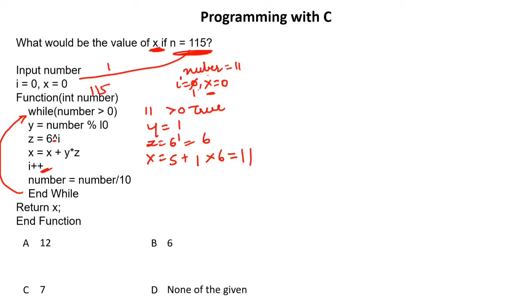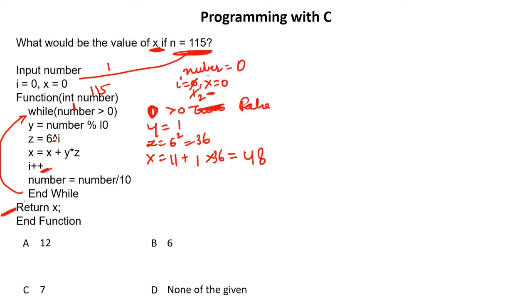Number becomes 11 / 10 = 1. Is 1 greater than 0? Yes. y = 1 modulo 10 = 1. z = 6 to the power 2 = 36. x = 11 + 1 * 36 = 47... so x becomes 48. Number becomes 1 / 10 = 0. Check: is 0 greater than 0? No — condition is false, so we exit the loop and return x, which is 48.